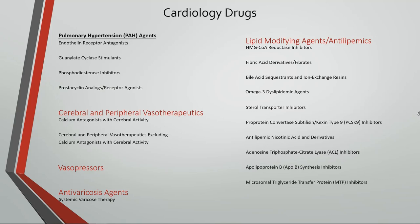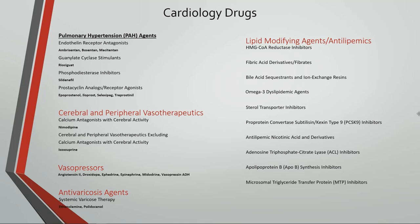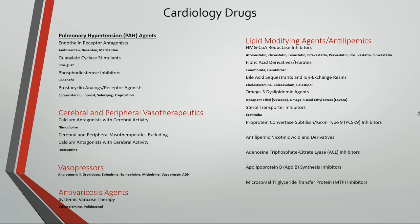Cardiac stimulants include cardiac dopaminergic agents and cardiac stimulants excluding dopaminergic agents. Ductus arteriosus agents include agents for closure and maintenance of a patent ductus arteriosus. We also have guanylate cyclase stimulants and positive inotropic agents. Finishing off cardiac therapy, pulmonary hypertension agents include endothelin receptor antagonists, guanylate cyclase stimulants, phosphodiesterase inhibitors, and prostacycline analogs or receptor agonists. Lipid modifying agents include HMG-CoA reductase inhibitors, fibrates, bile acid sequestrants, omega-3 dyslipidemic agents, sterol transporter inhibitors, and PCSK9 inhibitors.